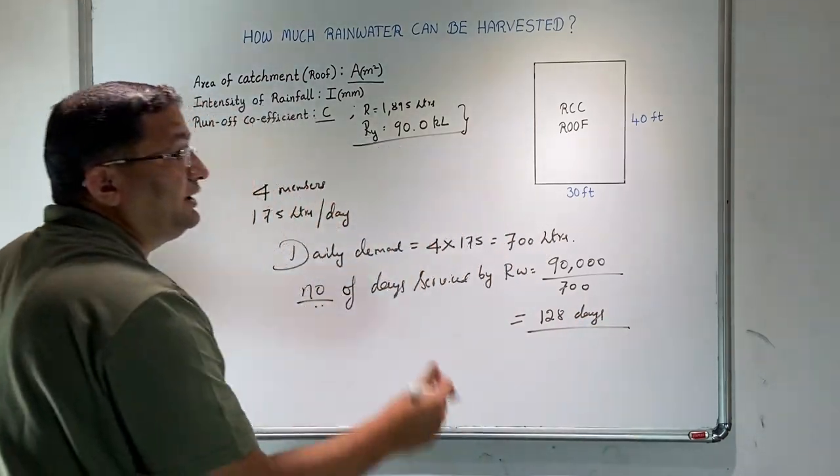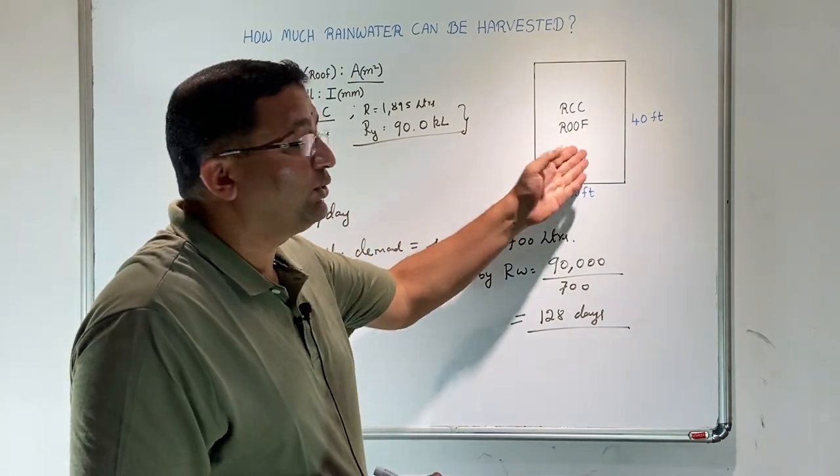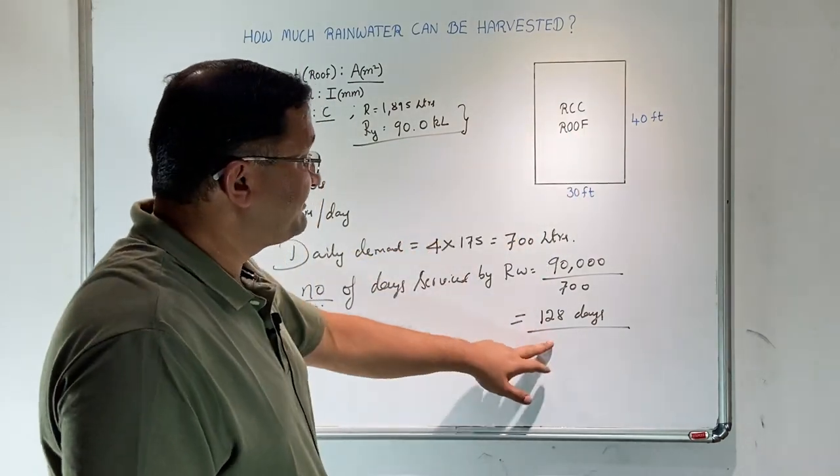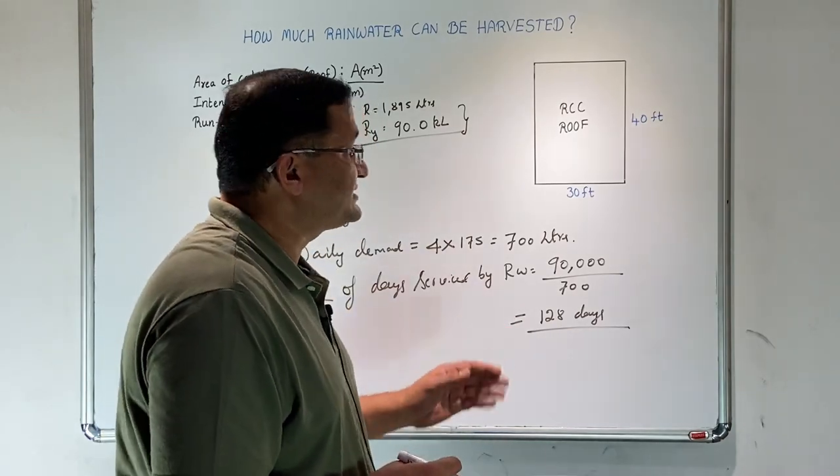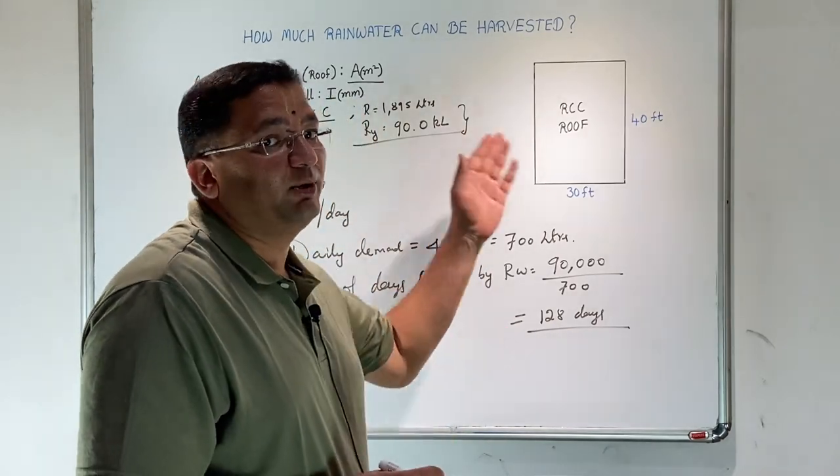By purely rainwater alone, by capturing the rainwater falling on the surface, this family can thrive for 128 days. So much water falls right above our head.